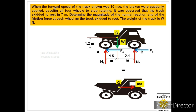This system of forces is equivalent to the motion of the truck in the forward direction. We attach a vector MA at its mass center. The given data: initial velocity of the truck is 10 meters per second, and since the truck skidded to rest, the final velocity is 0. The distance is 7 meters.